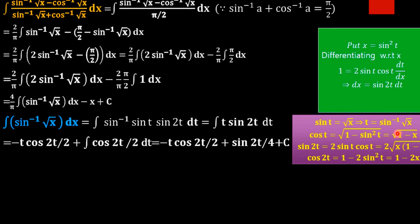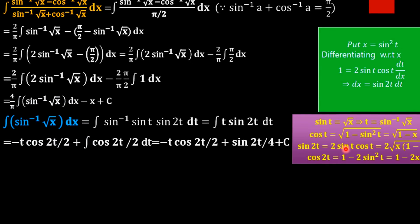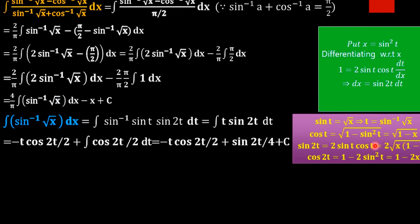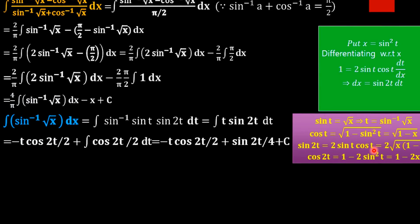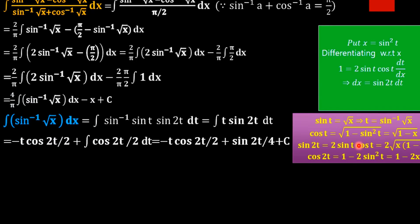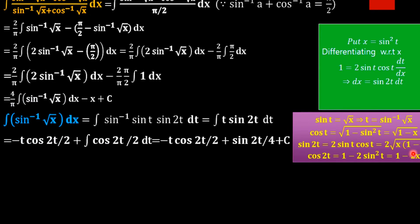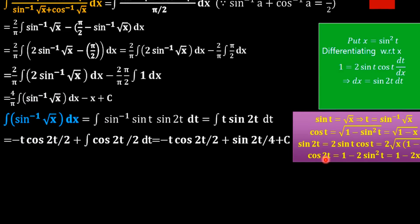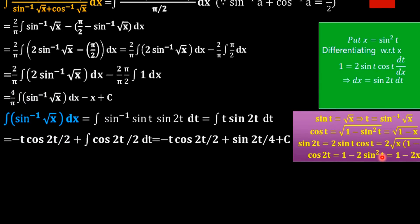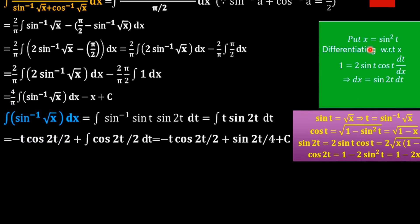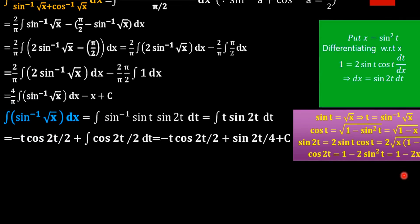cos t equals root of 1 minus sin squared t, which is root of 1 minus x. So sin 2t equals 2 sin t cos t equals 2 times root x times root of 1 minus x. And cos 2t equals 1 minus 2 sin squared t equals 1 minus 2x.